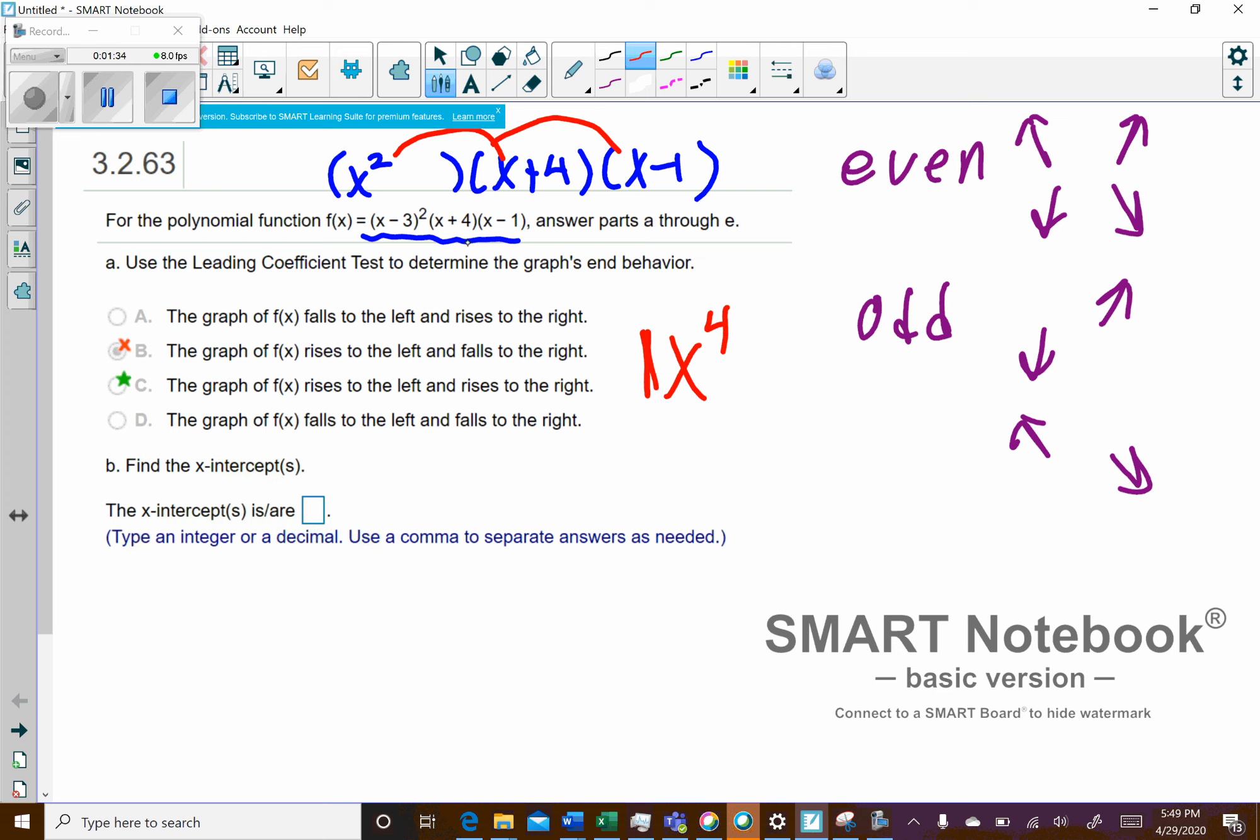There wasn't any negative values associated with those x's. So the leading coefficient is positive, and it's even. So since it's positive and even, it's going to be rising both to the left and to the right. Now, if I would have had a negative value in front, then they would have both been falling.